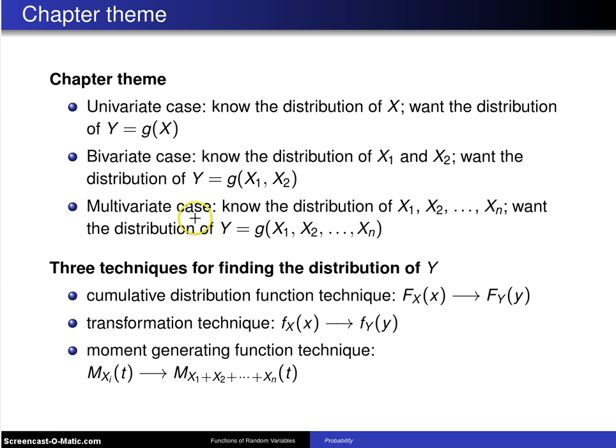In the multivariate case, we know the joint distribution of X1, X2 up to Xn and we want the distribution of Y = g(X1,...,Xn). Now, you'll notice in all cases, we've got Y = g of some random variable or random variables. One thing that goes on in this chapter is when you see this over and over again, it'll seem like all the problems are exactly the same.